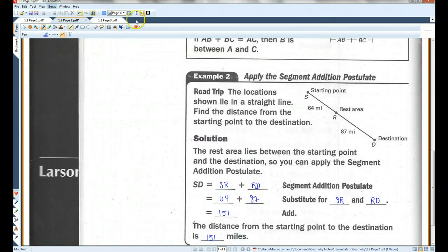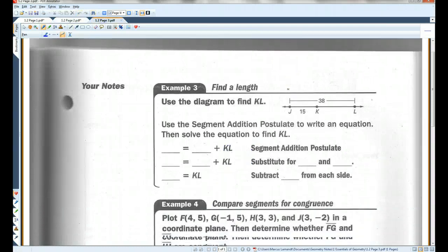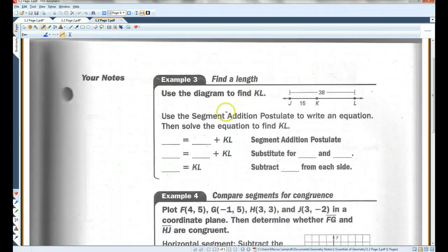Let's go on to page 3. Example 3, use the diagram to find KL. So in this case, the whole thing is 38. It doesn't give us the units. This piece is 15. We need to find the rest of it.